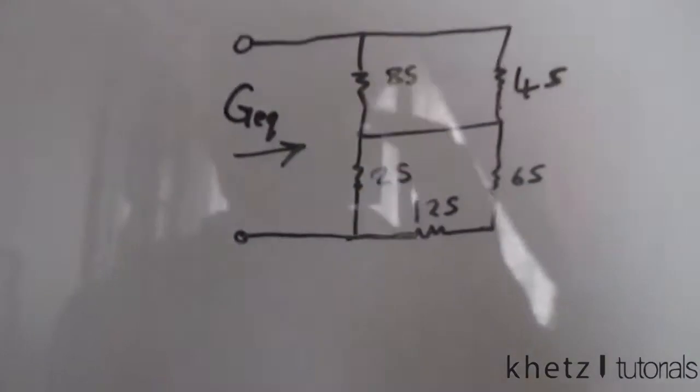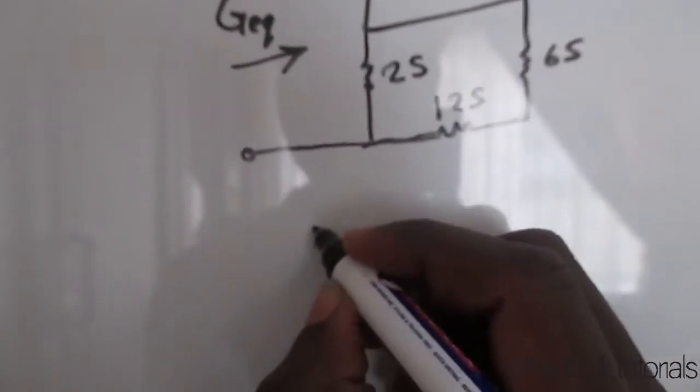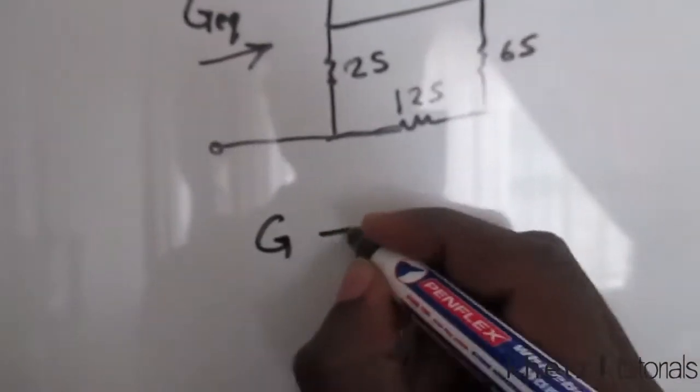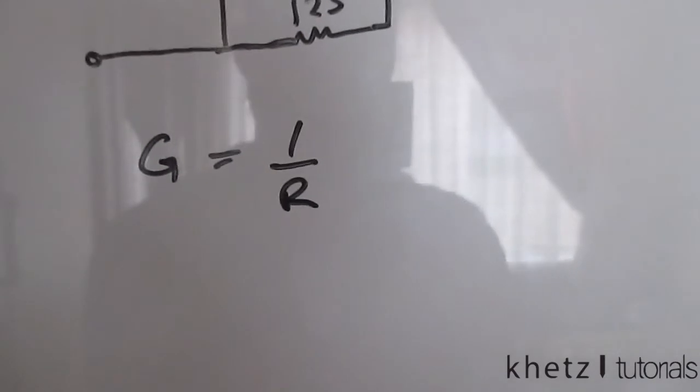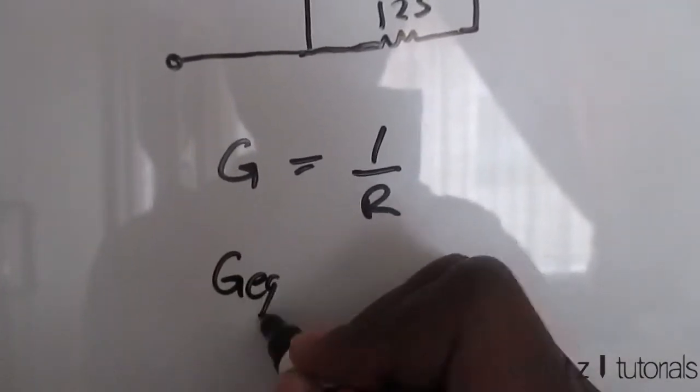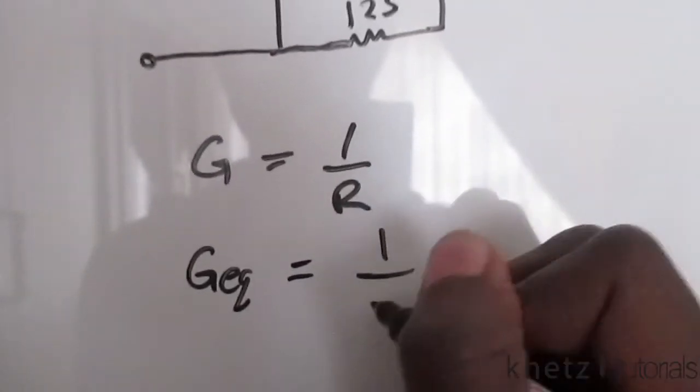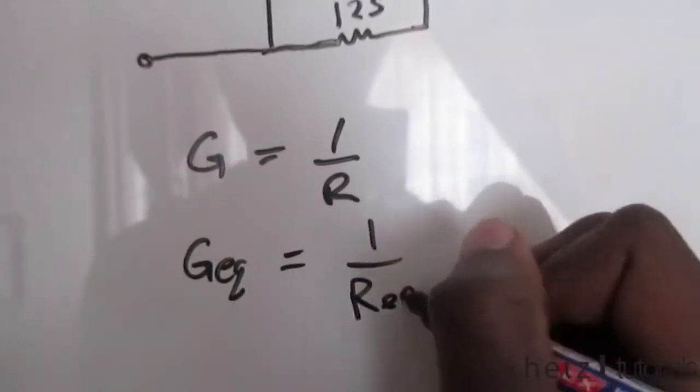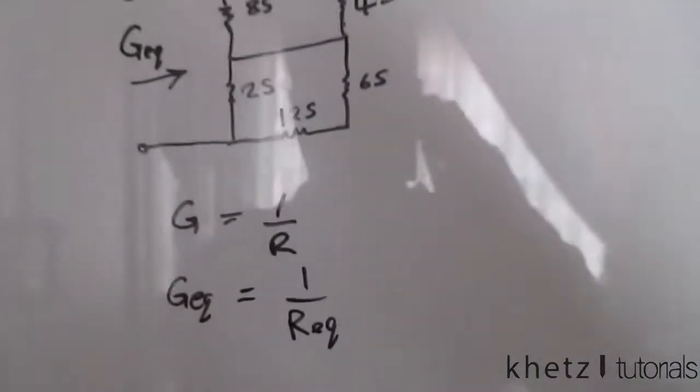Now let's have a quick recap from the textbook. G, which is conductance, is the reciprocal of resistance. Right? So G equivalent will also be the reciprocal of R equivalent. And what does this tell us?